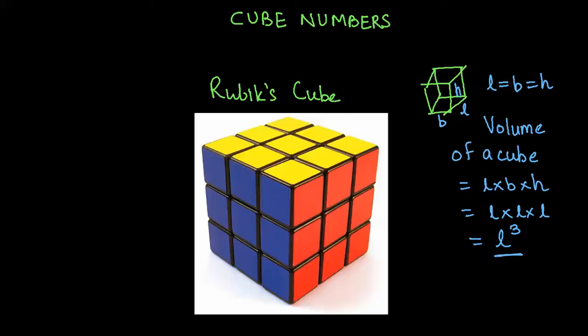So that is the volume of a cube. Similarly for this Rubik's Cube if you want to find out the volume of this cube you will know that this length here, this is its breadth and this being its height, they are all the same: L into B into H.